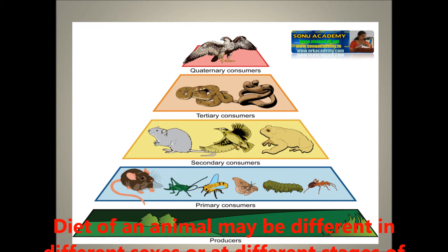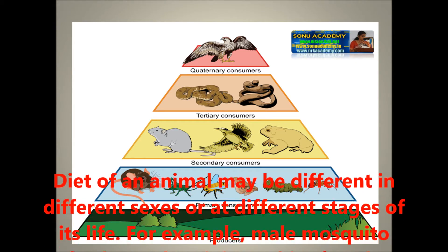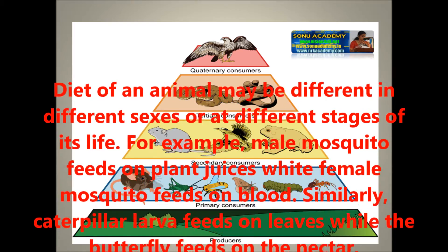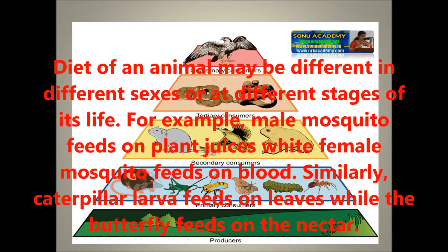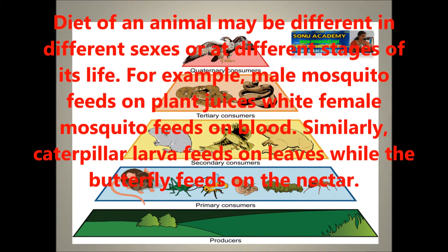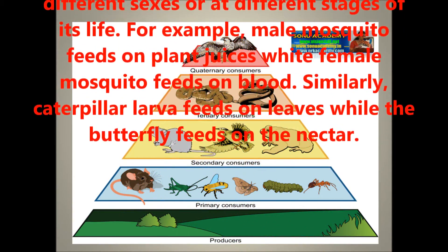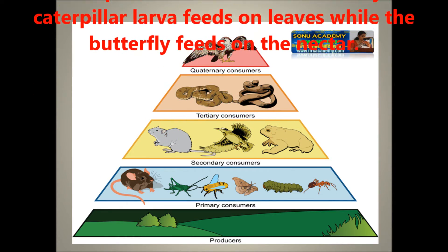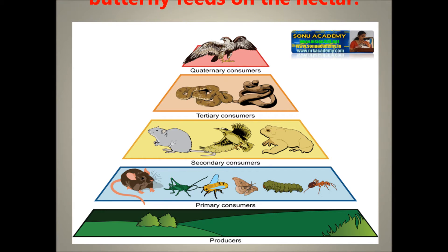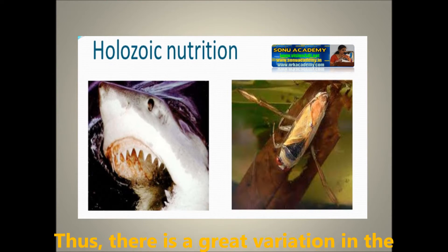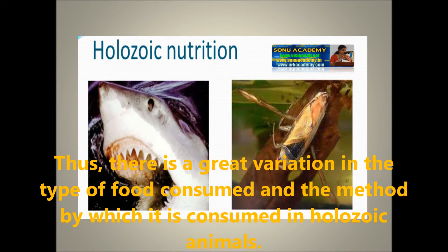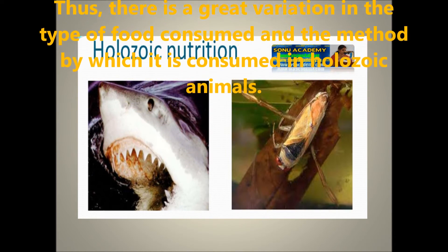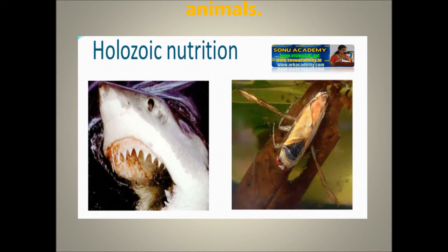The diet of an animal may be different in different sexes or at different stages of its life. For example, the male mosquito feeds on plant juices while the female mosquito feeds on blood. Similarly, the caterpillar larva feeds on leaves while the butterfly feeds on nectar. Thus, there is great variation in the type of nutrition consumed and the method by which it is consumed by holozoic animals.